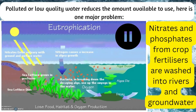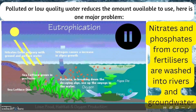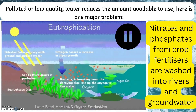Polluted or low quality water reduces the amount available to use, hence it is one major problem. Nitrates and phosphates from crop fertilisers are washed into rivers and groundwater through a process called eutrophication.